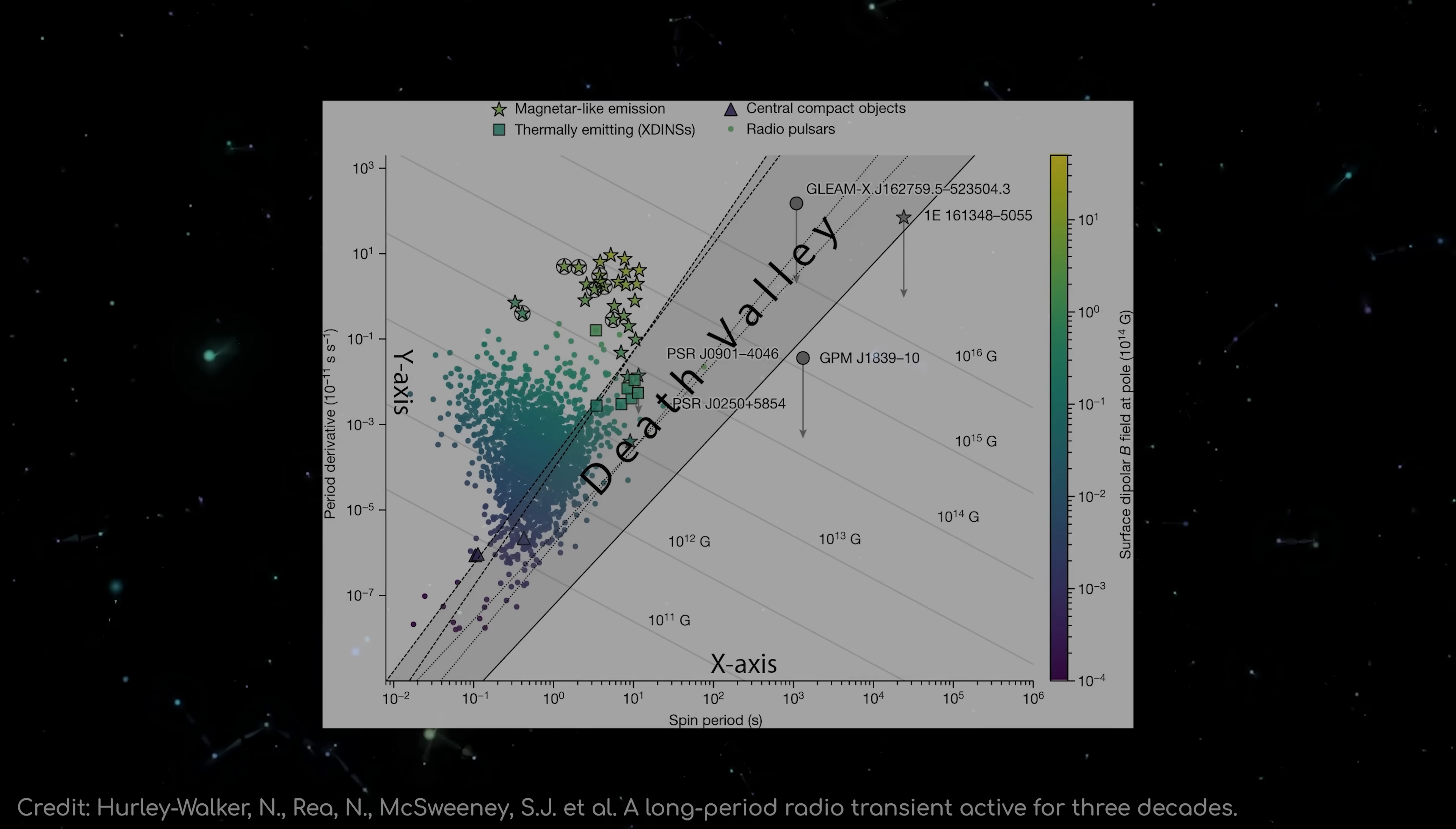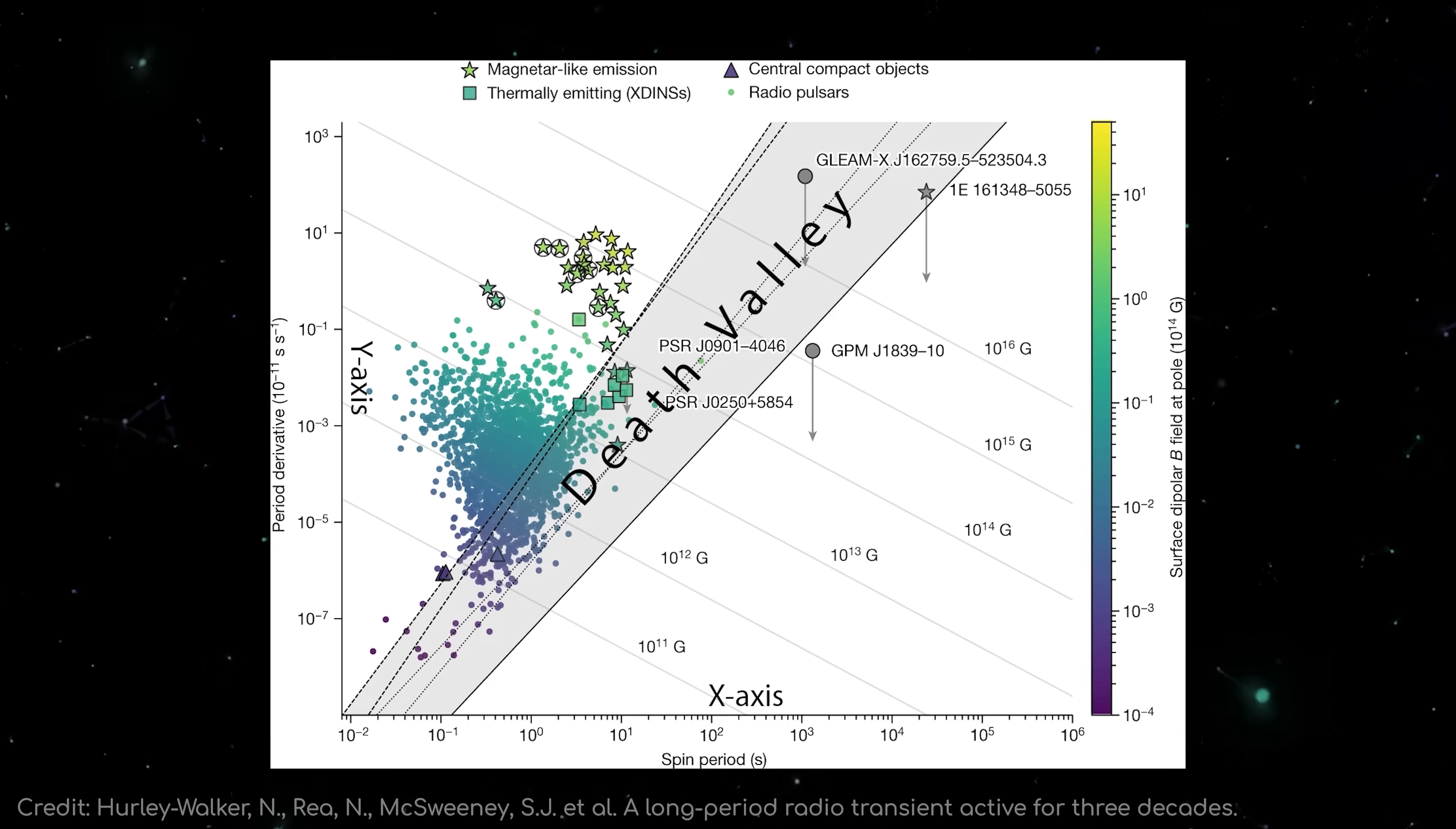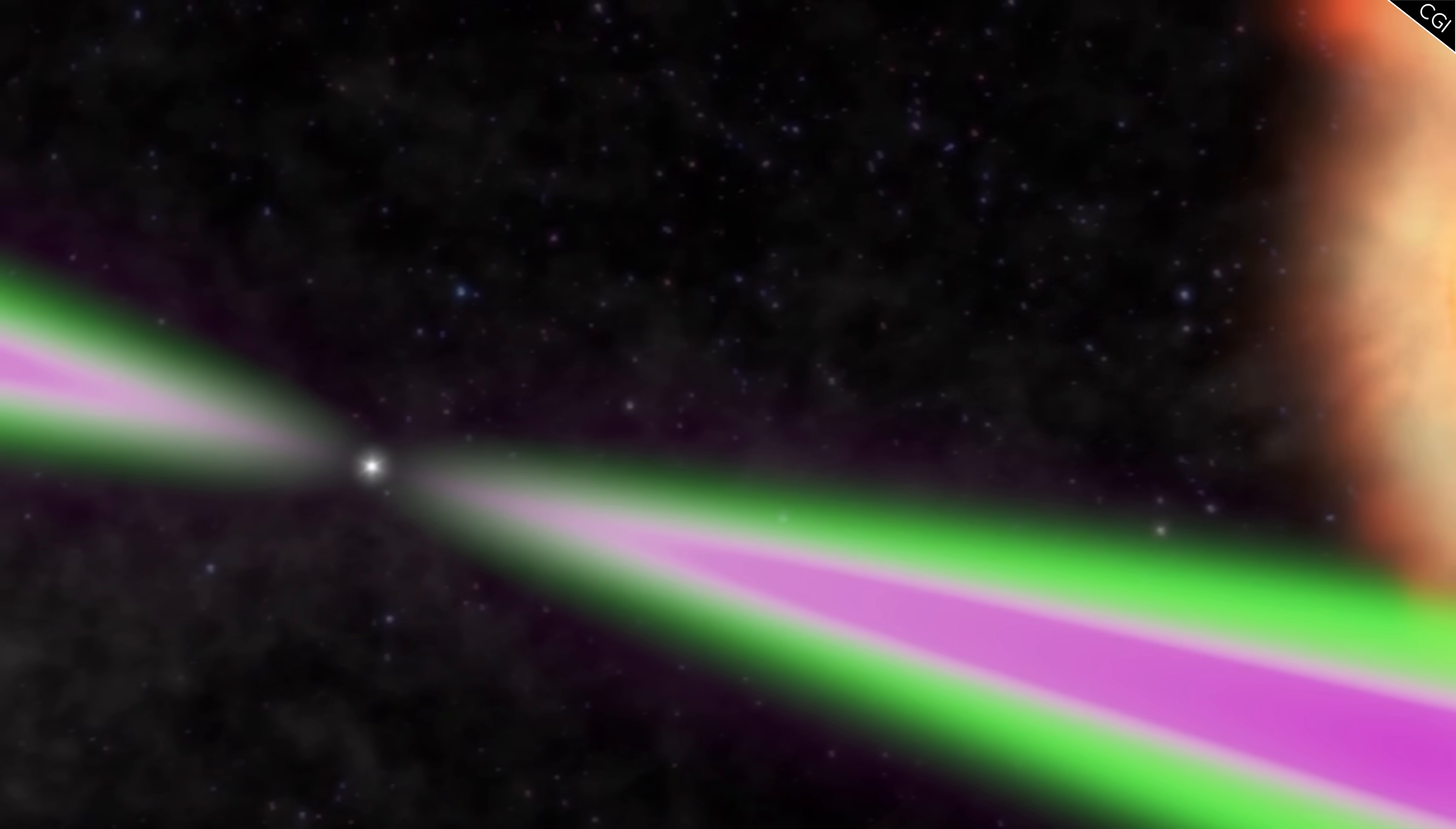This graph plots neutron stars based on their rotation period on the x-axis, and the rate of change of their rotation period on the y-axis. Death Valley is shown in this grey band running through the middle, and any pulsar that has properties below this line should not be shining as the bright lighthouses they usually are. We see that our signal is below even the lowest line marking the Death Valley, meaning that, if it were a pulsar, it should be well and truly switched off.